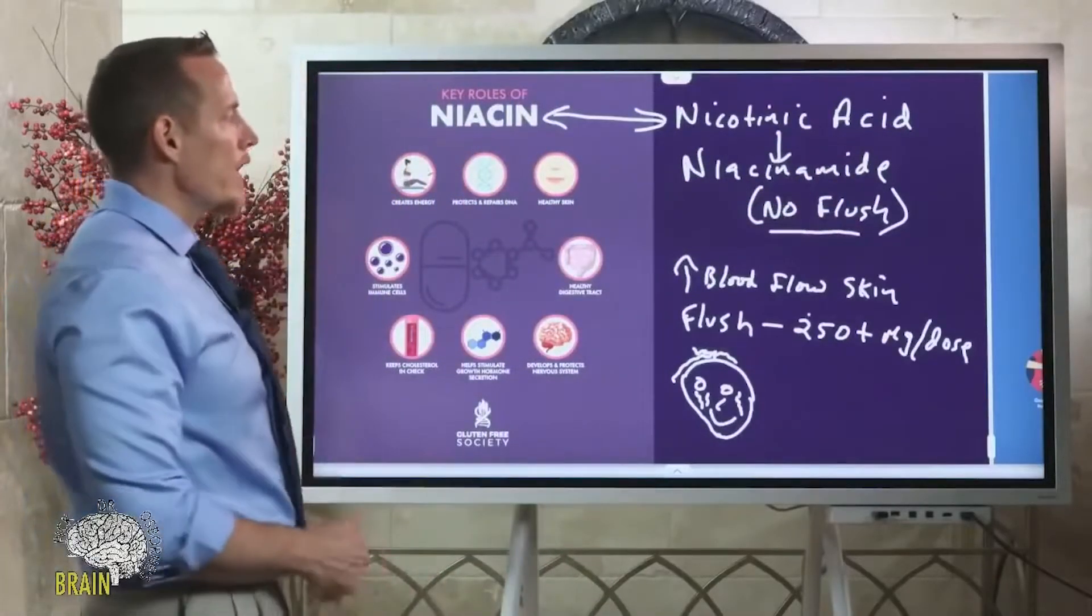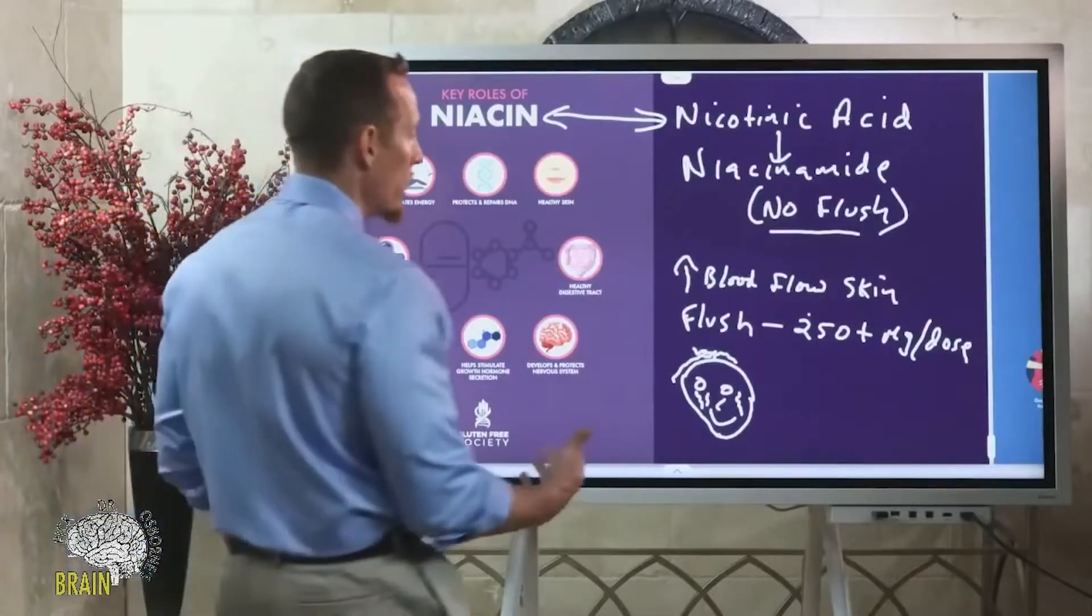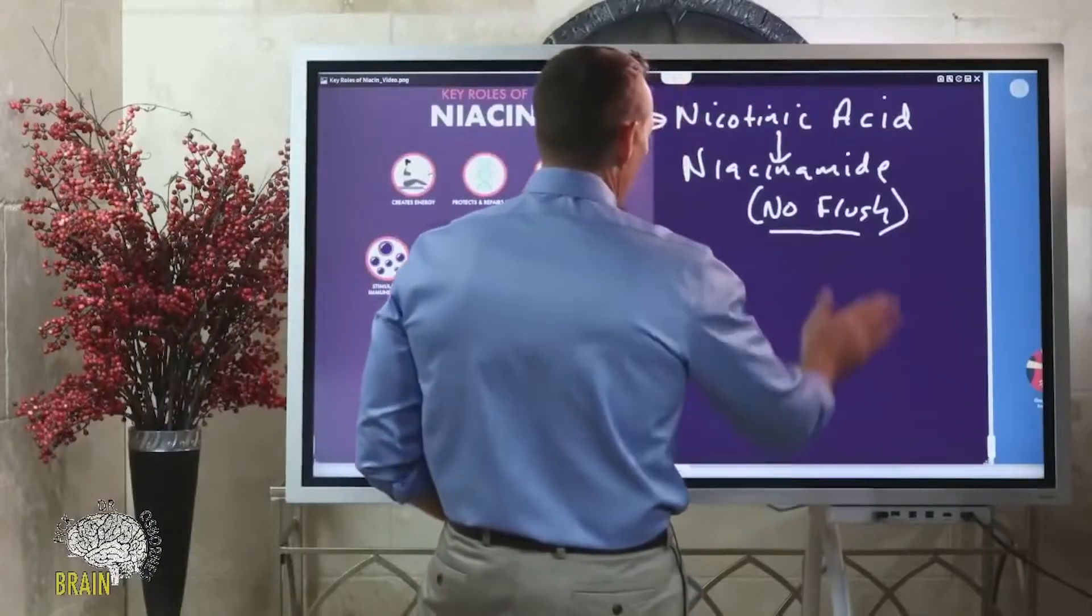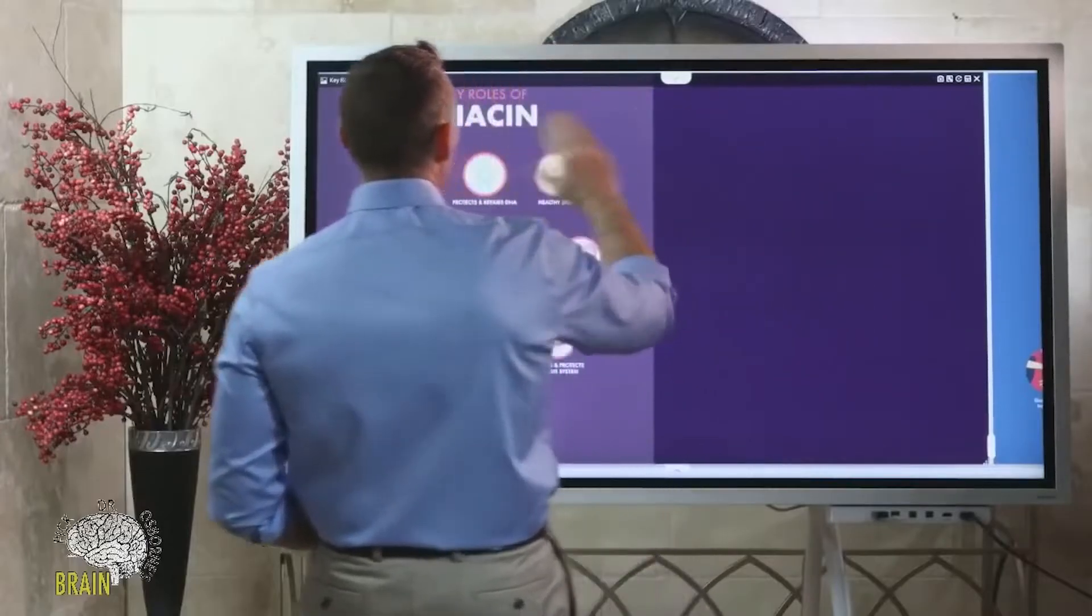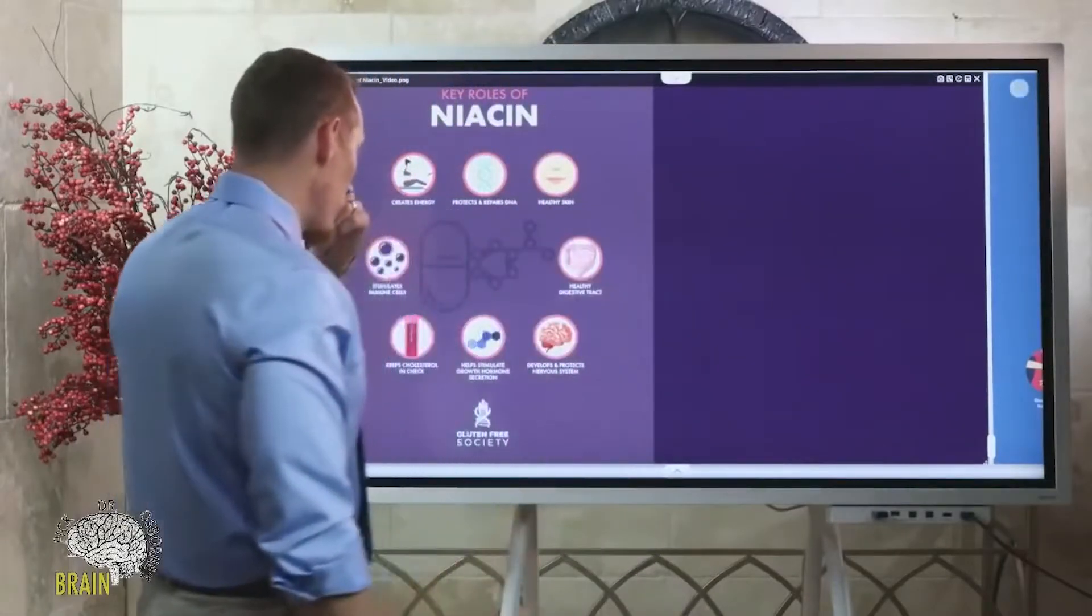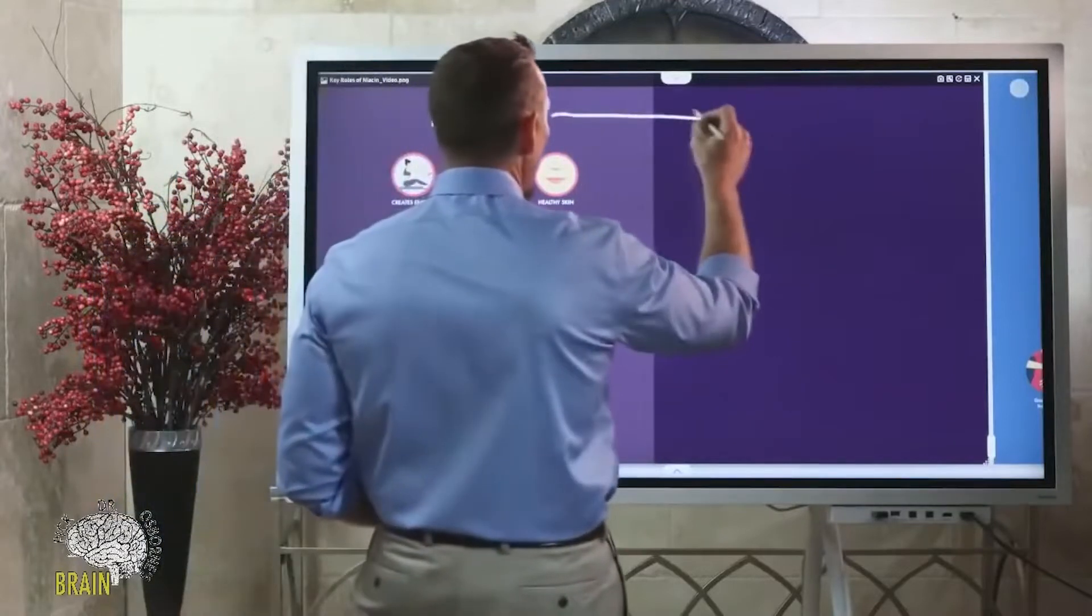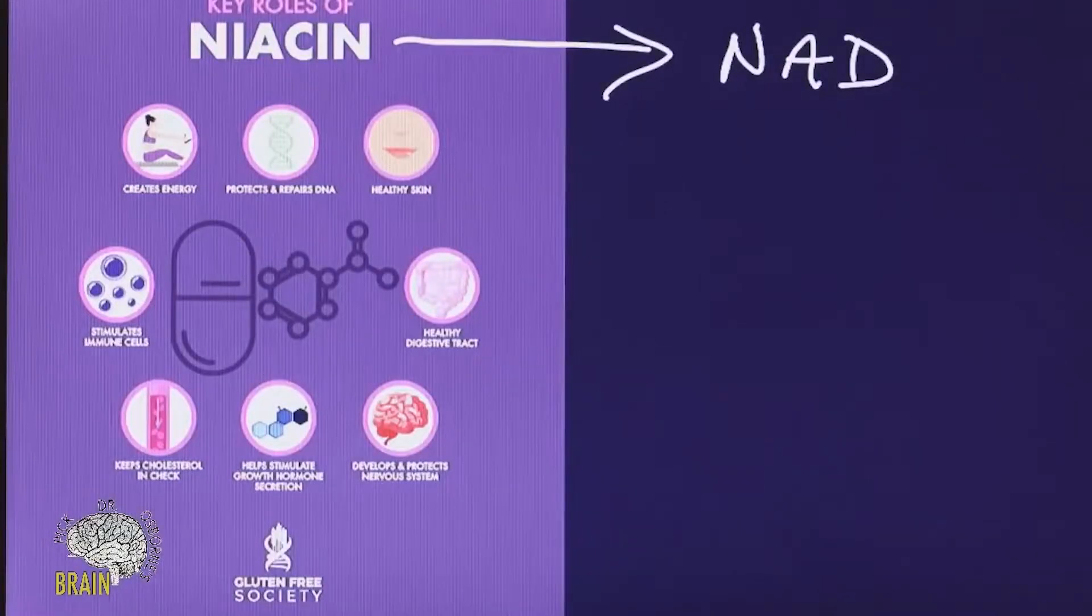What does niacin do? Aside from making your skin potentially uncomfortable and flush, what is it that niacin is actually important to do? There are a number of different functions that niacin has. Niacin's a B vitamin. We've talked about a number of B vitamins on the show. In biochemistry, if you have an old biochemistry textbook, there's this term called NAD, which stands for nicotinamide adenine dinucleotide.